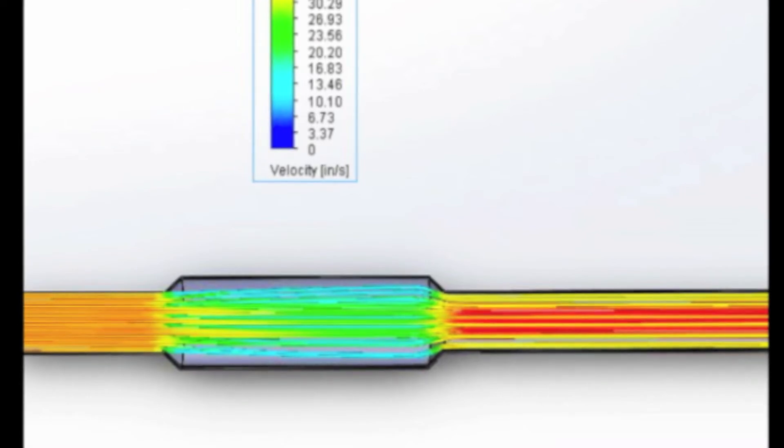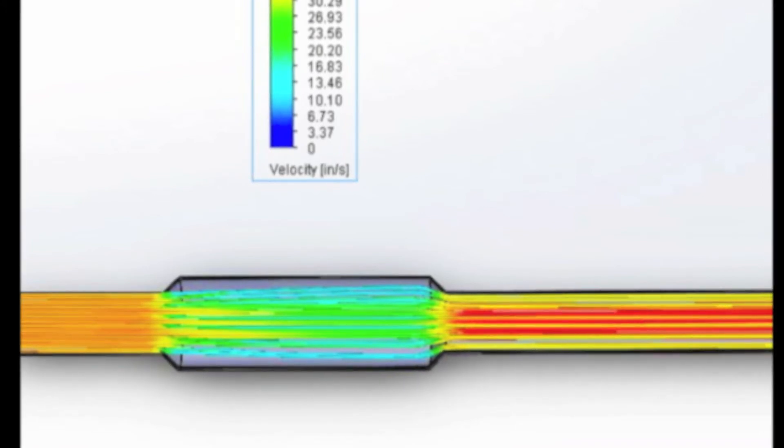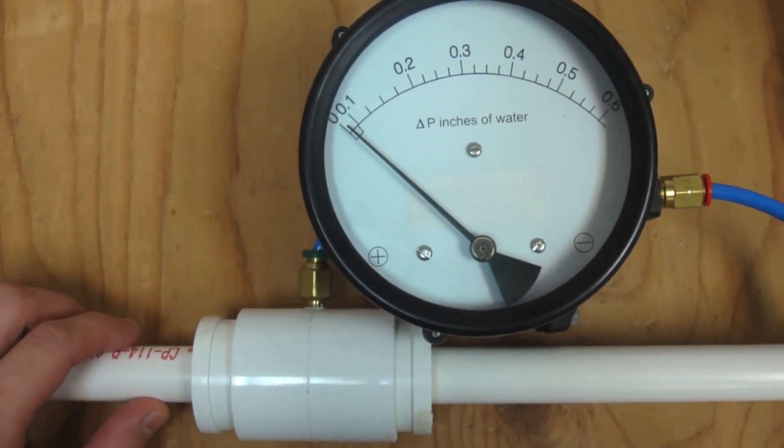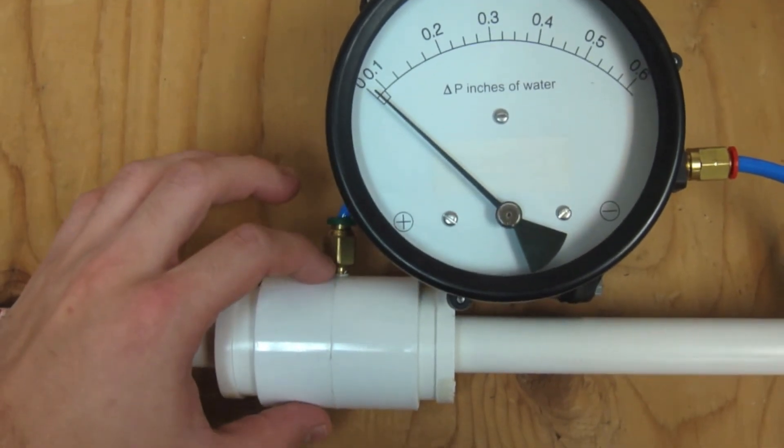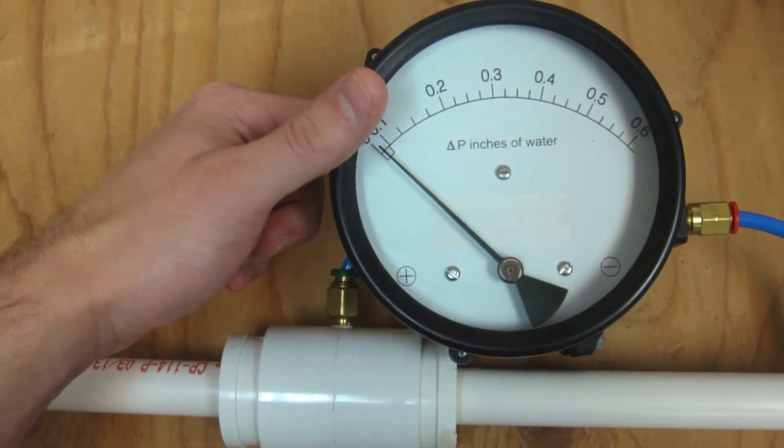So this is a good simulation to show that an expansion type venturi meter really does work but let's hook it up in real life and see if we can get the same results to occur. All right so here's the setup. This gauge is from differential pressure plus incorporated.